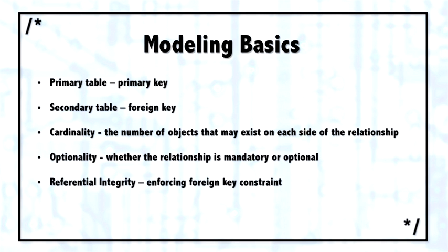Then there's referential integrity. Referential integrity, or RI, is often thought of as no orphans. Meaning if there's a row in the secondary table with a foreign key, there has to be a row matching it with a primary key. That's close but not exactly correct because of optionality. A better way to state referential integrity would be that if there is a value in the foreign key, there has to be a matching value in the primary key.